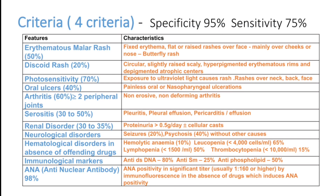If you see the criteria for SLE, there are a lot of diagnostic features, and at least four should be positive. The most important clinical feature is the erythematosus rash — mainly seen in the face. Malar rash or butterfly rash is seen in around 50% of patients. Discoid rash, a circular rash especially on the trunk, is seen in 20% of patients.